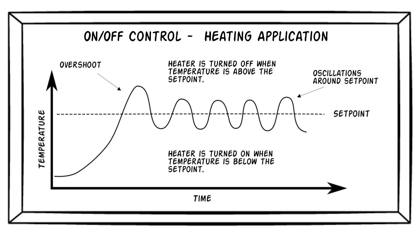The magnitude of the overshoot and oscillations depends on the specifics of the process. Some processes may experience greater overshoot and larger oscillations than others. If overshoot and oscillations are not a concern, on-off control may be a good choice for the application.